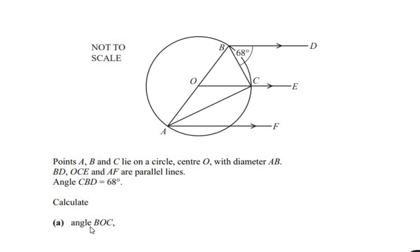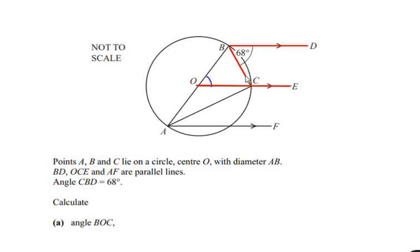We have to calculate the angle BOC, which is this angle. Now let us consider the two parallel lines BD and OCE. We can see that points B and C are acting as the transversal lines which cut the two parallel lines at point B and point C. So by using the properties of parallel lines, we can say that angle B is equal to angle C, which is 68 degrees.